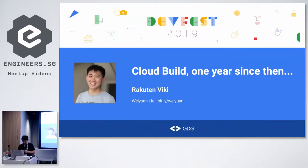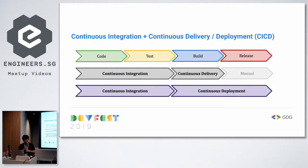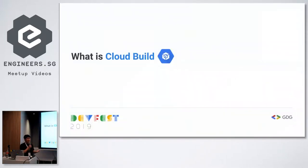I'm going to be talking about Cloud Build, but I'll assume most of you know what CI/CD is. To go through it quickly: CI/CD stands for continuous integration and continuous delivery or deployment. It's essentially the automation of the pipeline between your development phase and your deployment phase.